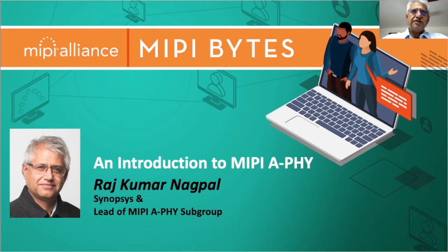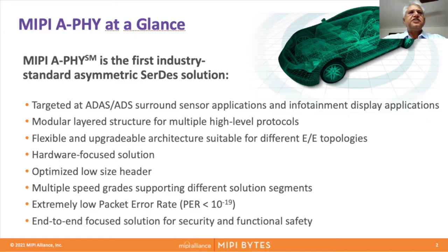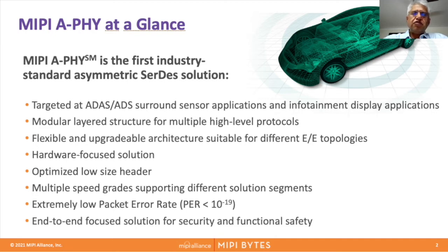Hi everybody, I'm Rajkumar Nagpal, coming from Synopsys, and I'm going to give a top-level introduction of A5 physical layer. A5 physical layer is basically an industry-first standard in the automotive domain. This physical layer is primarily targeted for ADAS applications for all kinds of sensors — camera, radar, lidar — and infotainment.